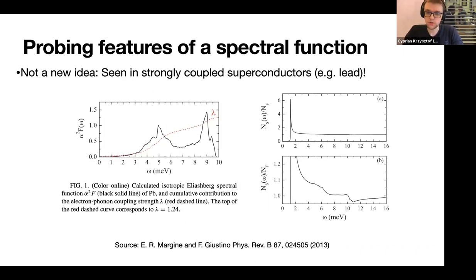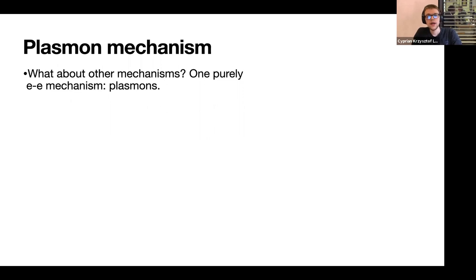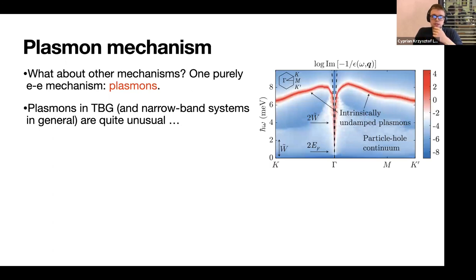This concludes the section on phonons. In the last 15 minutes or so, I wanted to touch upon the plasmon channel, which is perhaps a bit more exotic. The idea is that the phonon mechanism is the most likely one given all of the experimental evidence, but it's nonetheless very interesting to look at the possible purely electronic mechanism. The motivation is that the plasmon dispersions in TBG, and generally in narrow-band systems, are a bit unusual.